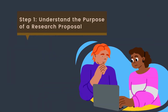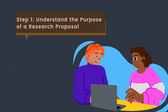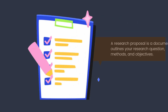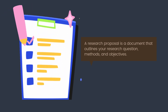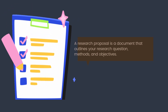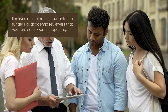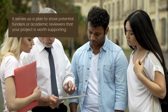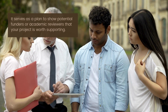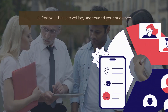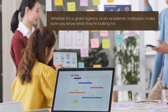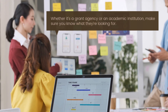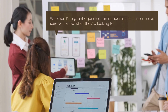Understand the purpose of a research proposal. A research proposal is a document that outlines your research question, methods, and objectives. It serves as a plan to show potential funders or academic reviewers that your project is worth supporting. Before you dive into writing, understand your audience — whether it's a grant agency or an academic institution, make sure you know what they're looking for.